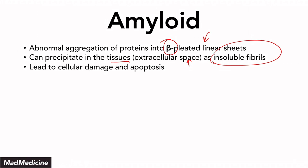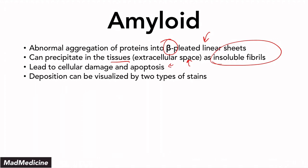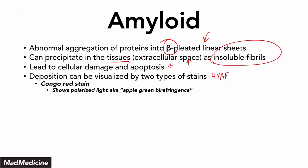This deposition can lead to cellular damage and even cause apoptosis locally. The deposition can be visualized by two main stain types. The hallmark, pathognomonic answer for amyloid is Congo red staining. If you hear Congo red staining and it shows apple green birefringence under polarized light, this is hallmark for amyloid. Apple green birefringence in polarized light with Congo red staining is pathognomonic for amyloid and amyloid deposition. Do not forget this — it is very high yield and a giveaway.